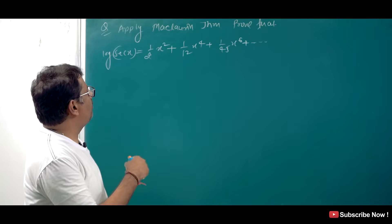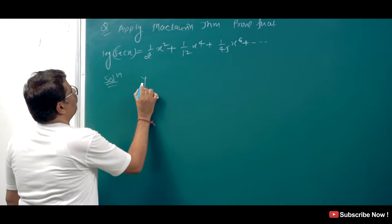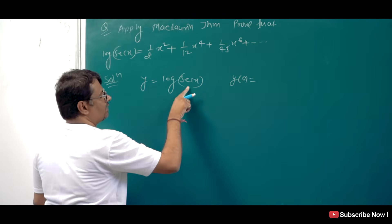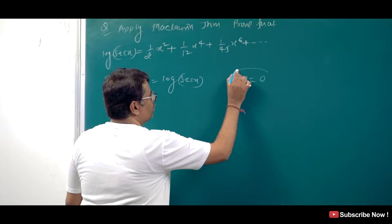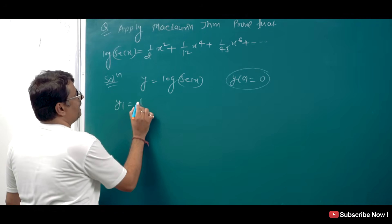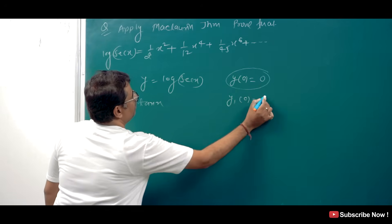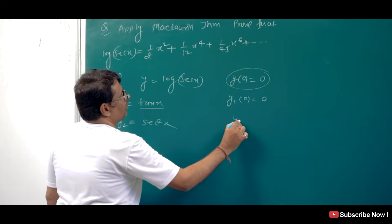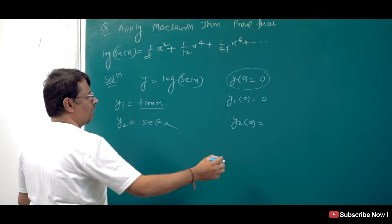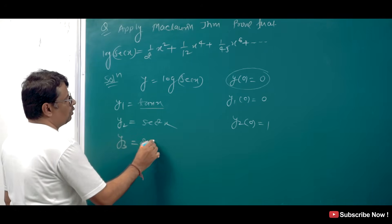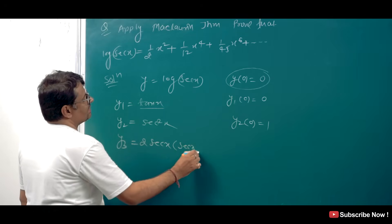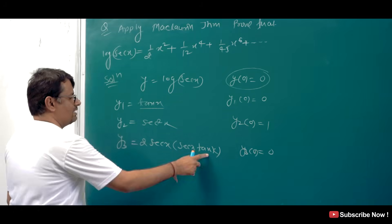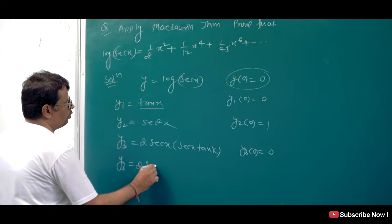Apply Maclaurin's theorem to prove the expansion of log(sec x). Here y = log(sec x). y(0) = log(sec 0) = log 1 = 0. Differentiating: y₁ = tan x, so y₁(0) = 0. Then y₂ = sec²x, so y₂(0) = 1. Then y₃ gives y₃(0) = 0 because tan(0) = 0.